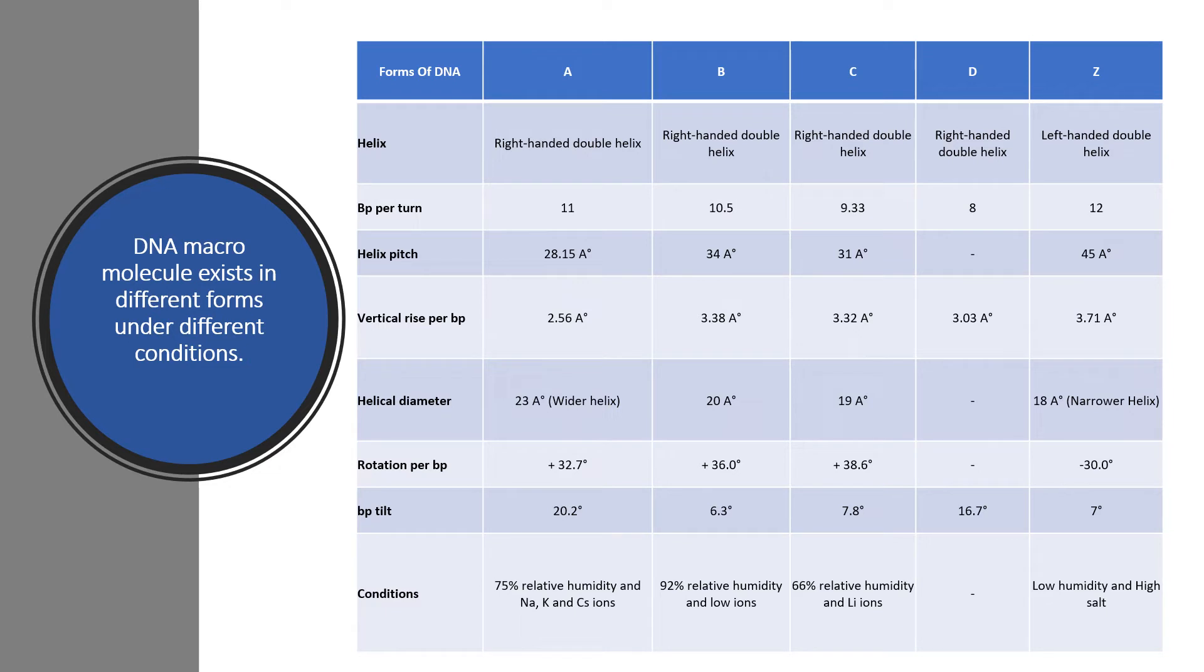Helix pitch in A DNA is 28.15 angstrom, in B DNA it is 34 angstrom, 31 angstrom in C DNA and 45 in Z DNA.